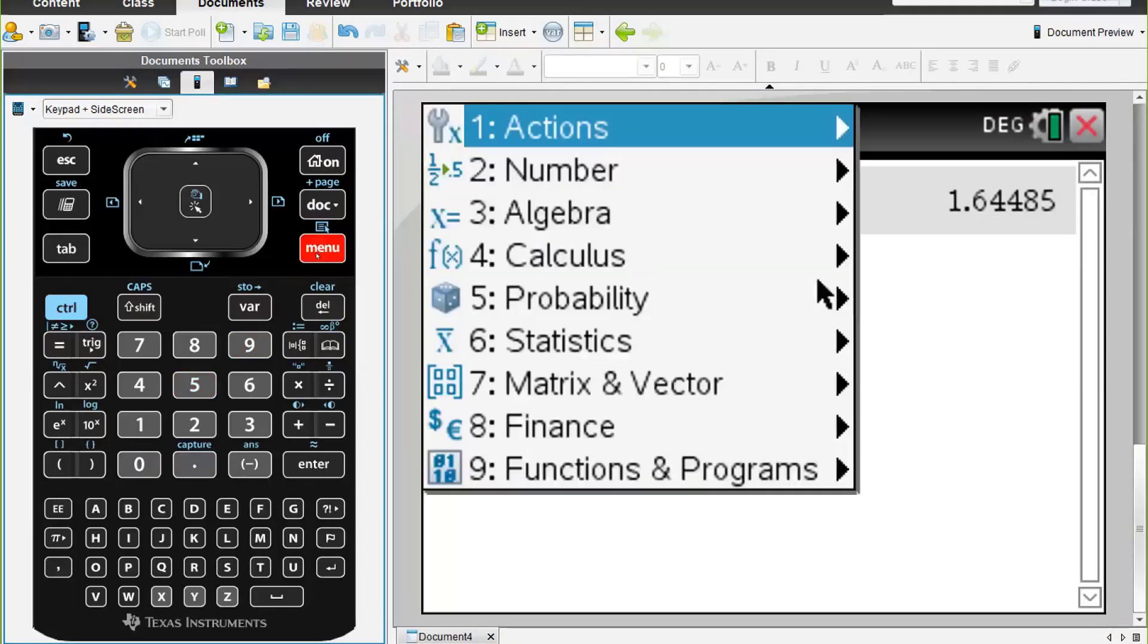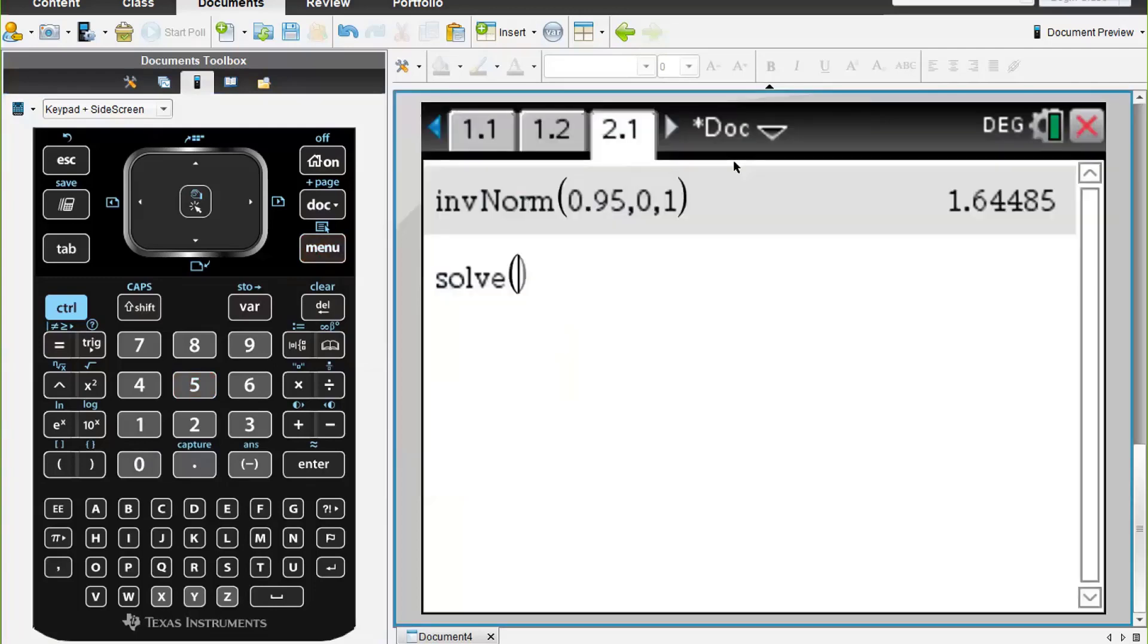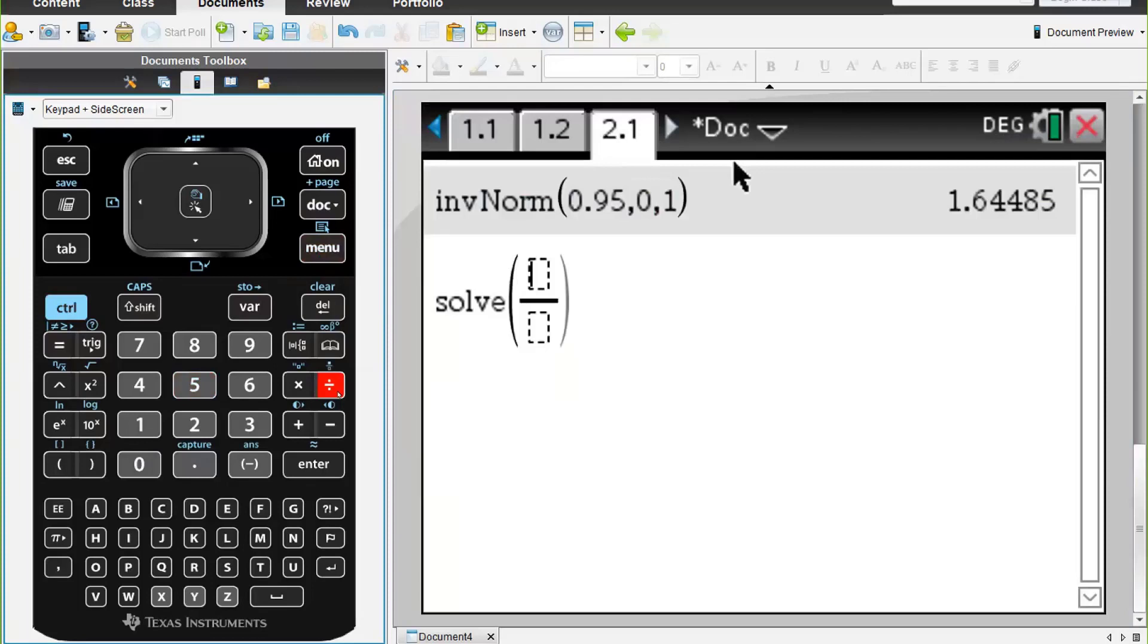So I'm going to just go up arrow and select that value. We need to multiply that by 4, the standard deviation, and then we need to put in the square root of n, divide that by the square root of n by our formula.